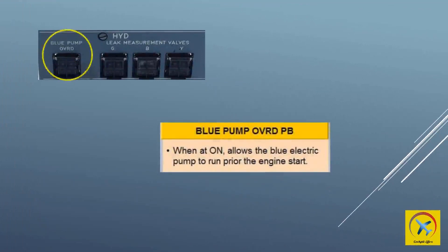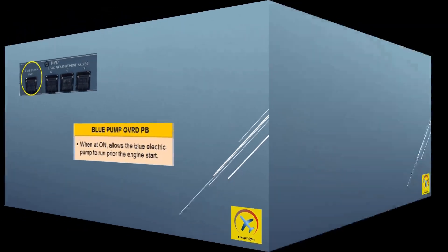Blue electric pump override push button switch: when it is on, it allows the blue electric pump to run prior to engine start. It can also be used during ground maintenance.